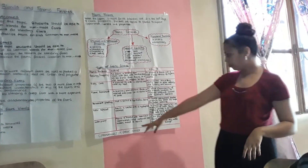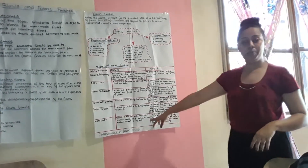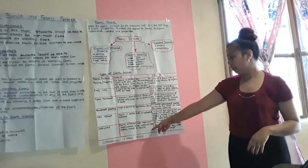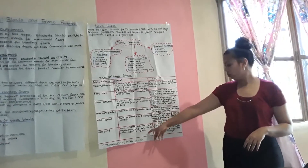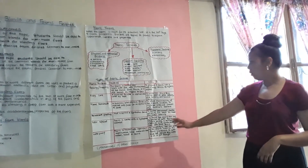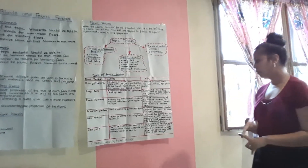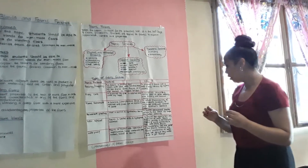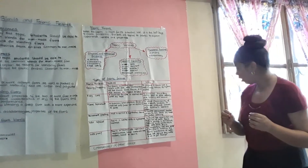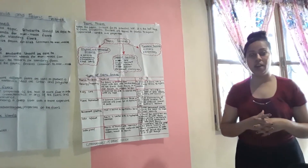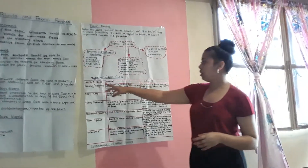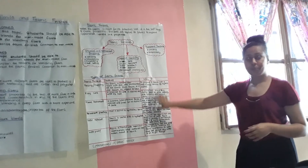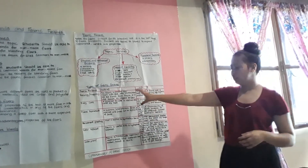Moving on to waterproof. The fabric is treated with impervious, impermeable solid materials like rubber, waxes, or resins. The reason this method is used is to completely seal the pores of the fabric, making it so that no water or air can get through. So these are the types of fabric finishes, their methods, and why each method is used.